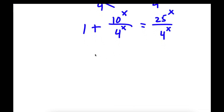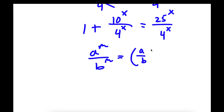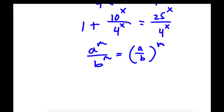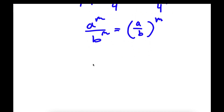Now if I have something in the form a to the power of m over b to the power of m, this is the same thing as a over b to the power of m. So for both 10 to the power of x over 4 to the power of x, and 25 to the power of x over 4 to the power of x, I can rewrite this as 10 over 4 to the power of x.